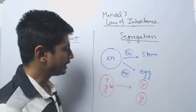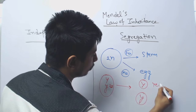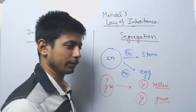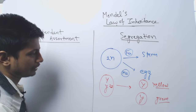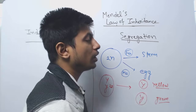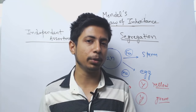For example, capital Y is for yellow flower color, and small y is for green. So if we are looking at the coloration of the flower — yellow or green — during gamete formation, they will transfer either capital Y or small y. If the gamete receives capital Y, the flower will be yellow; if it receives small y, the flower will be green. This is segregation, applicable to a monohybrid cross — it applies for a single trait.